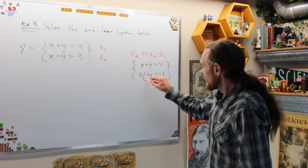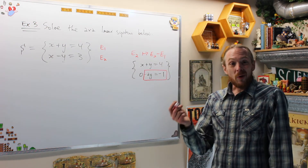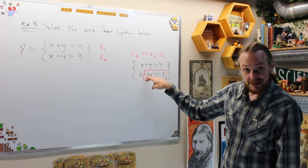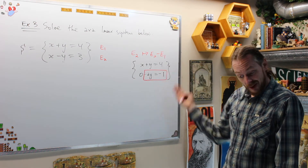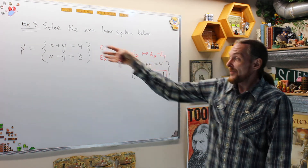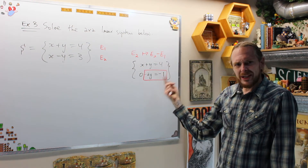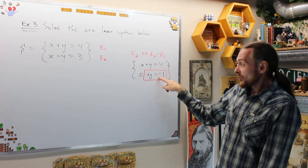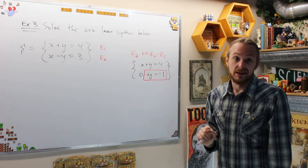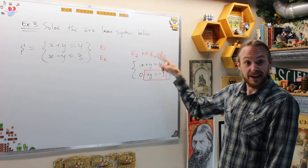Gaussian comes from Carl Friedrich Gauss, born in 1777, died in 1855 — the prince of mathematics. By doing that one move, we now have one equation in one unknown. Dividing, we get y equals negative one over negative two, which is one half. Once we know y is one half, we can substitute back and solve for x, getting seven halves.